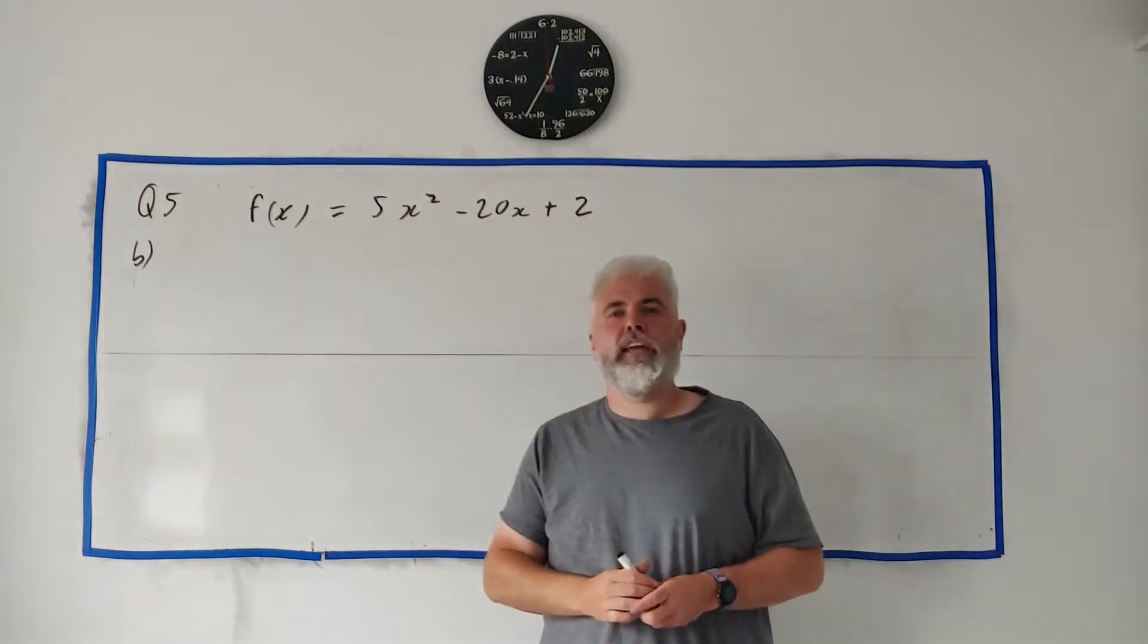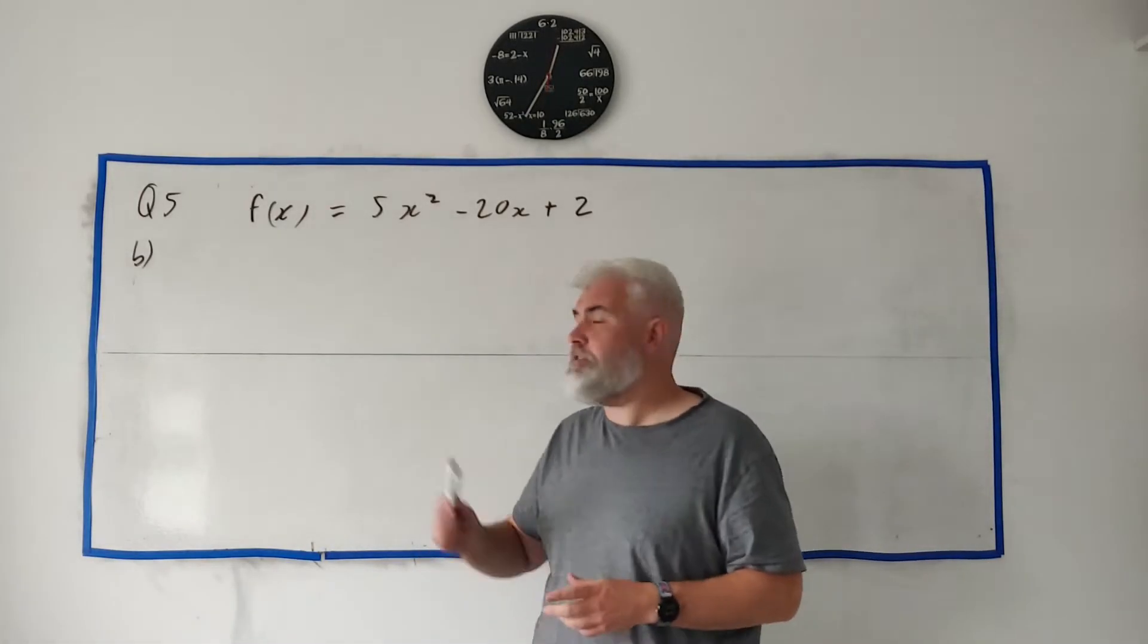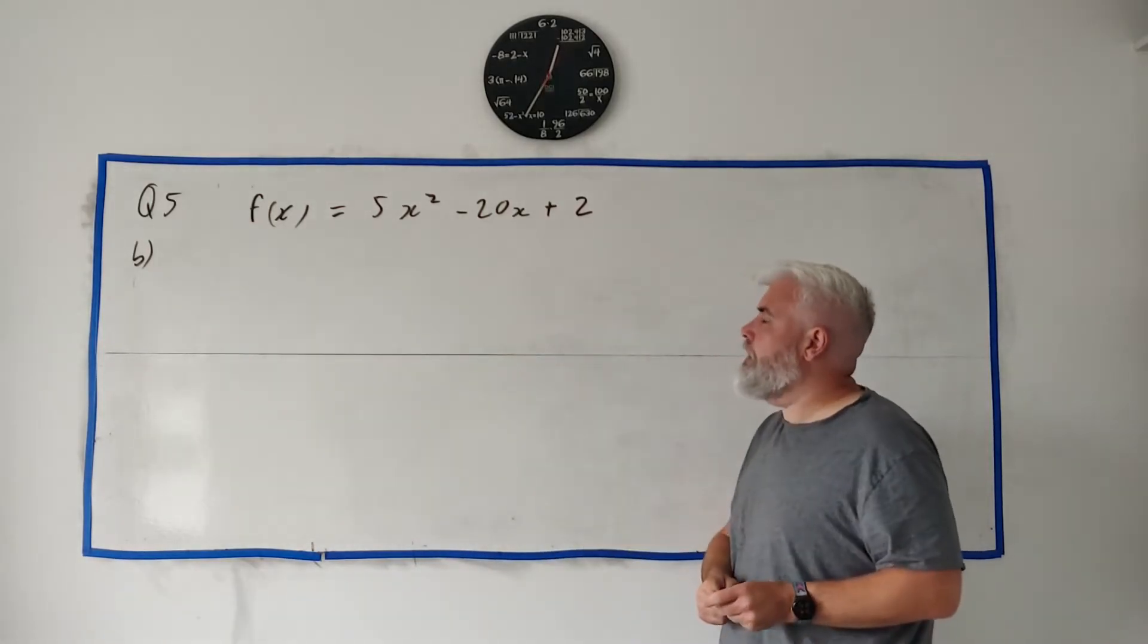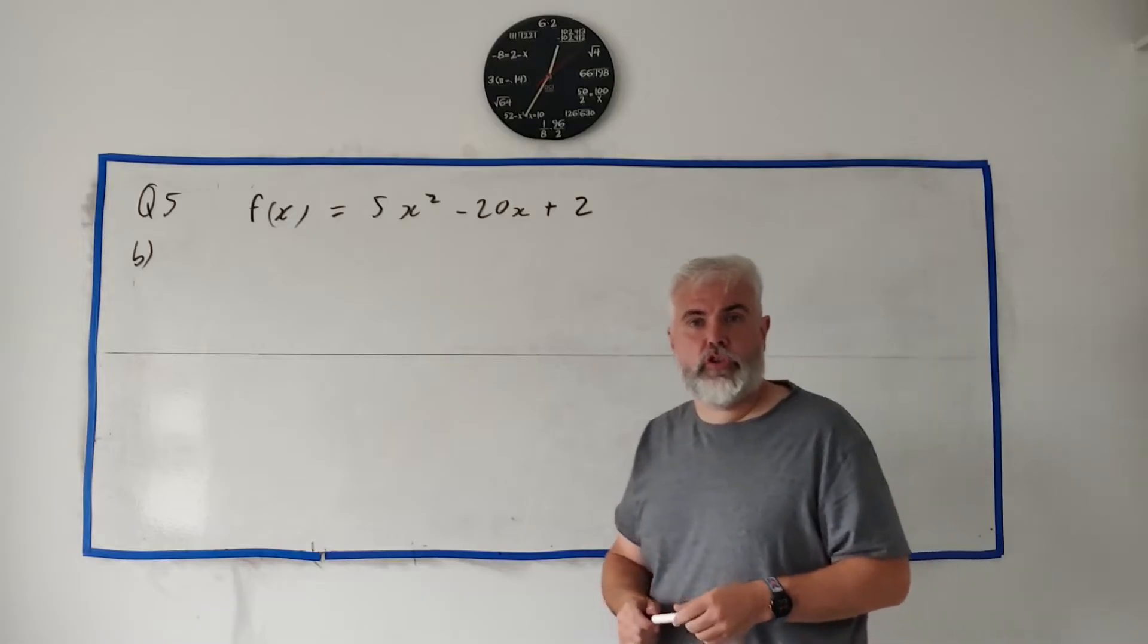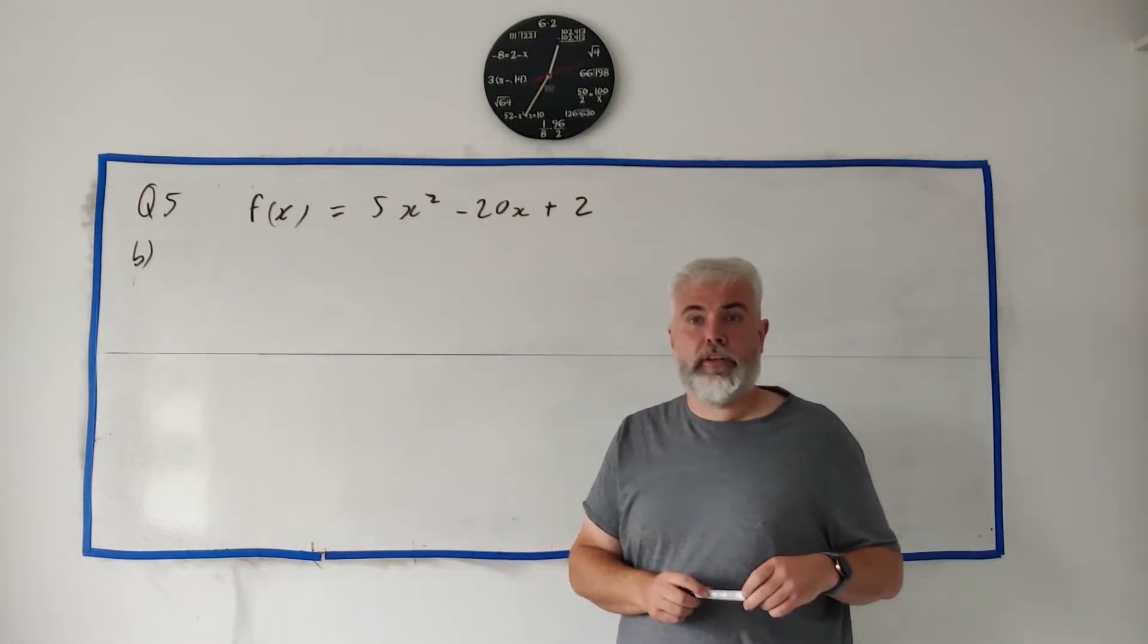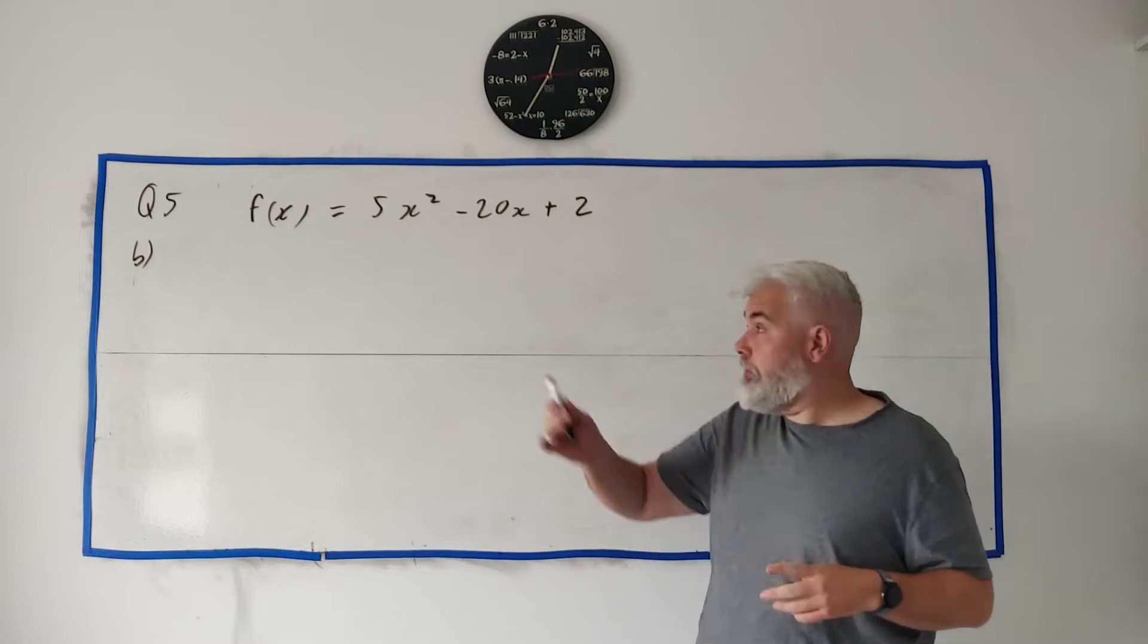Okay, in part B they give us a function f(x) is equal to 5x squared minus 20x plus 2, and they tell us to use calculus to find the coordinates of the local minimum point of f(x).